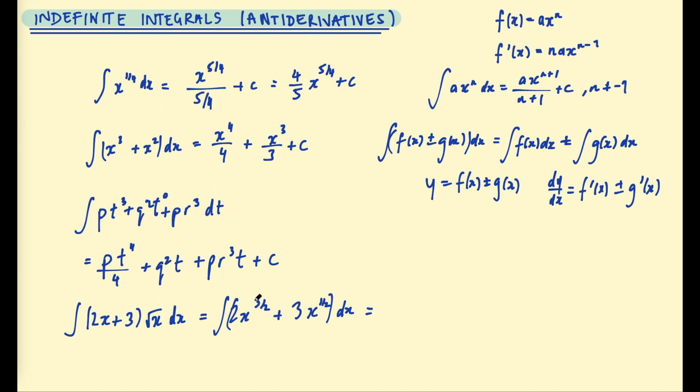And so now we can integrate each term separately. So this is when we add 1 to 3/2, that's 5/2, and then multiply by 2/5, that becomes 4/5 x to the 5/2. And the second term, adding 1 to a half, becomes 3/2, so dividing by 3/2 is the same as multiplying by 2/3. Those 3s would cancel, so we get 2x to the 3/2 plus c.